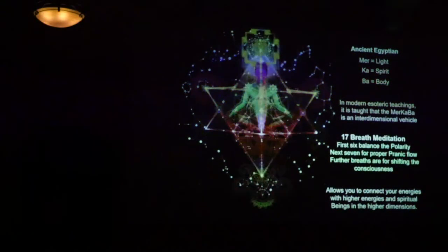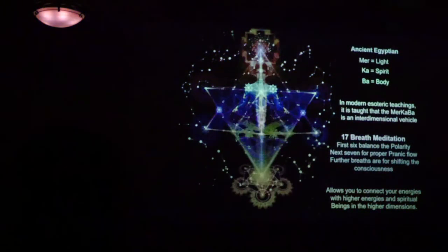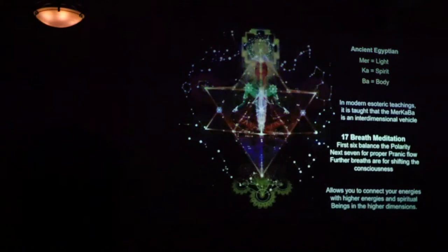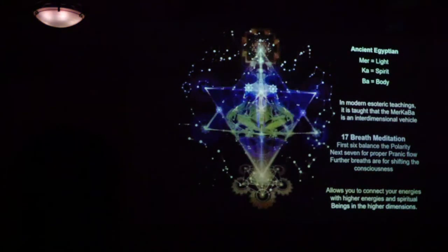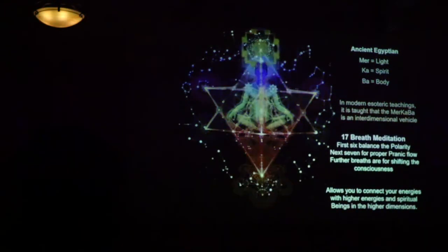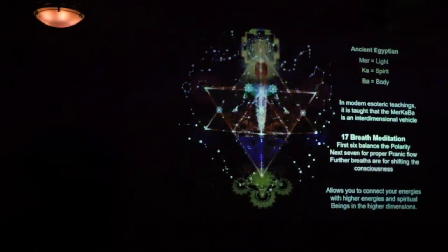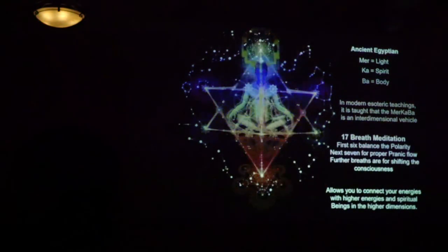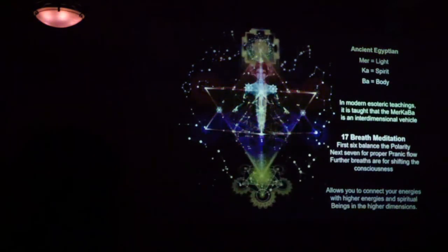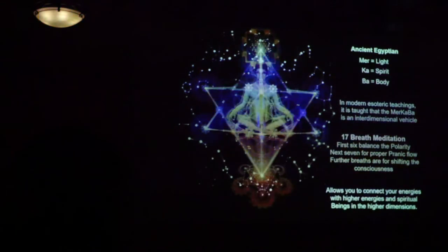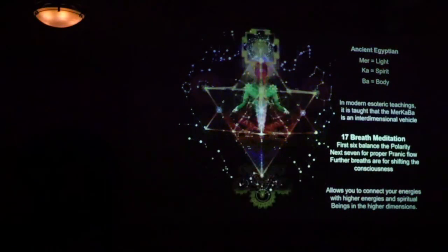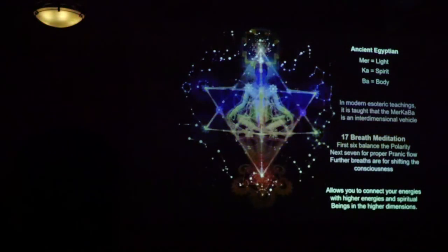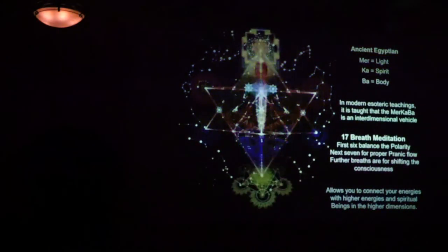It allows you to connect your energies with higher energies and spiritual beings in higher dimensions. Imagine you're going through the breathing exercise and you have this Merkaba around you. You do the breath. You start the Merkaba. And you have two Merkabas around you. Actually three. There's one that's stationary. But you have one that spins clockwise and one that spins anti-clockwise. One is male and one is female. And they spin at a Fibonacci ratio of 34 to 21. I did this exercise for probably about two or three months. And I had the weirdest dreams ever. It was fantastic. I could go and visit my dad in Scotland. I could go and do all sorts of stuff. I was where I wanted to be. It was an out-of-body experience. It was a wonderful experience, well worth looking into.